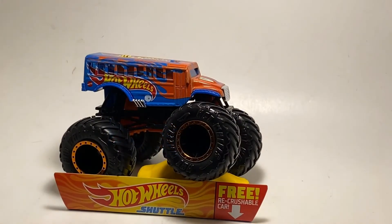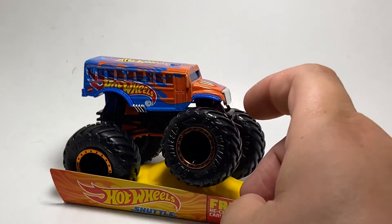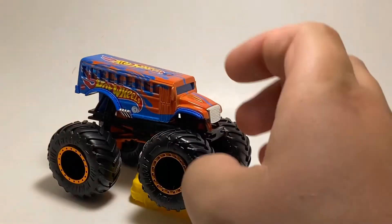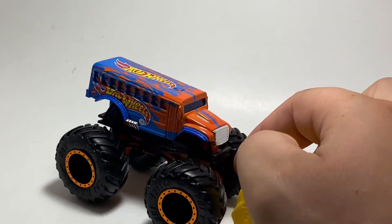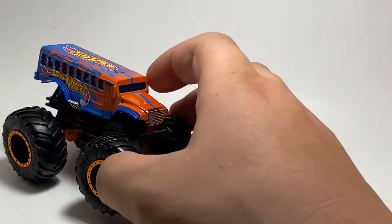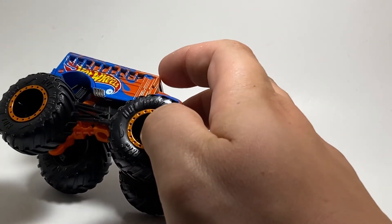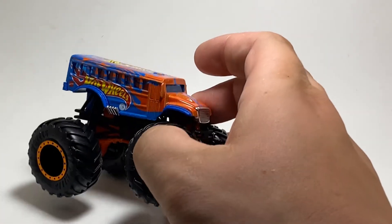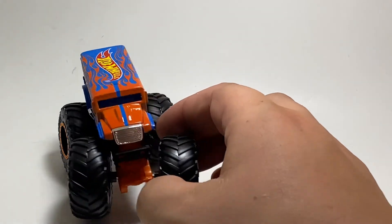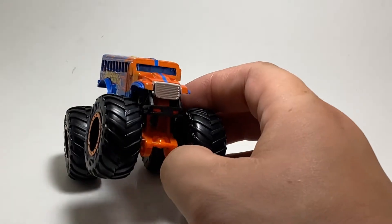Alright, so the Hot Wheels shuttle. This thing is pretty mean looking. So it comes with a yellow crushable car. It has a nice Hot Wheels shuttle, basically, I guess stand, or whatever you want to call it here. And the truck overall is pretty nice. Now one thing I really like about this truck is it has zoomies on the side. I think that is really cool how it has that. And honestly, it's overall not that bad of a looking truck.